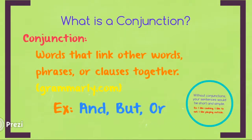What is a conjunction? A conjunction is defined as words that link other words, phrases, or clauses together. The three conjunctions we will be learning about today are and, but, or.